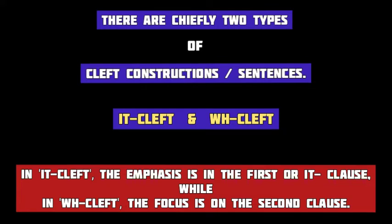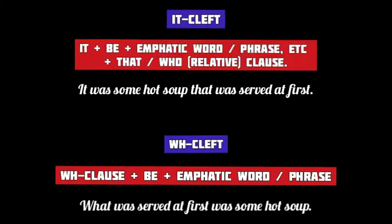There are chiefly two types of cleft sentences: it-cleft and what-cleft. A cleft sentence emphasizes new information in one clause along with old information in the other. In an it-cleft, the emphasis or new information is in the first or it-clause. In a what-cleft, the focus or new information is in the second clause. The structure of an it-cleft is: it + verb be + emphatic word or phrase containing the new information + a relative clause starting with 'that' or 'who.'